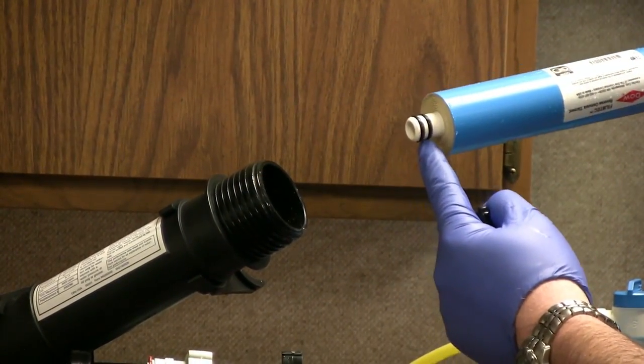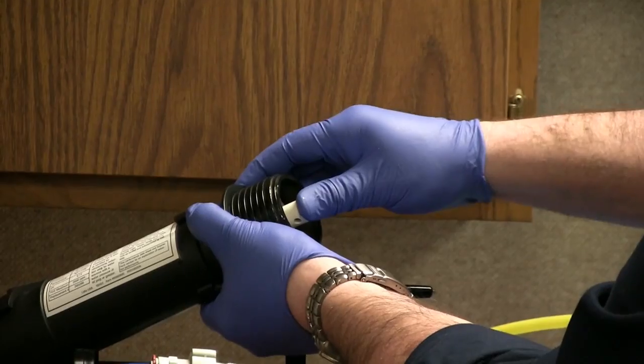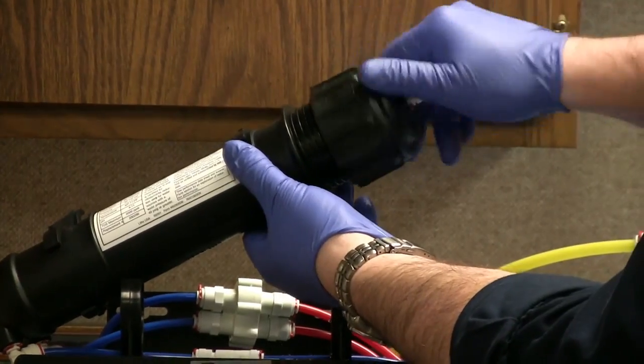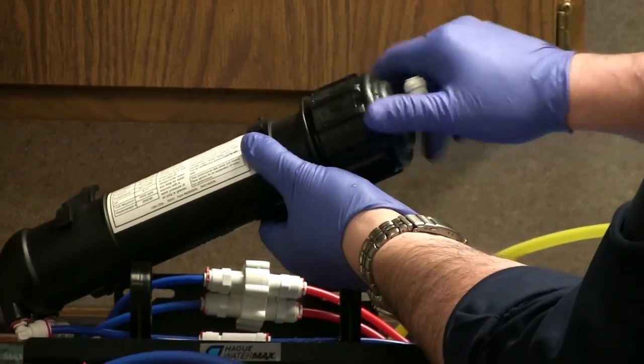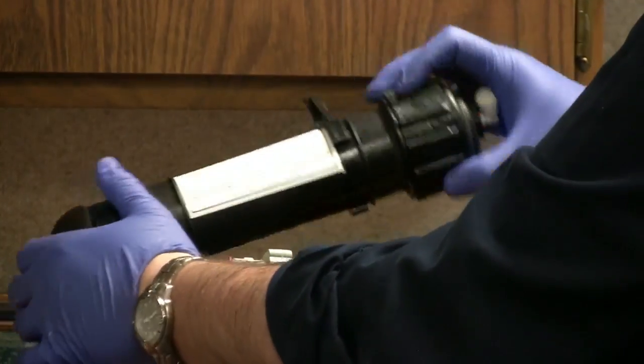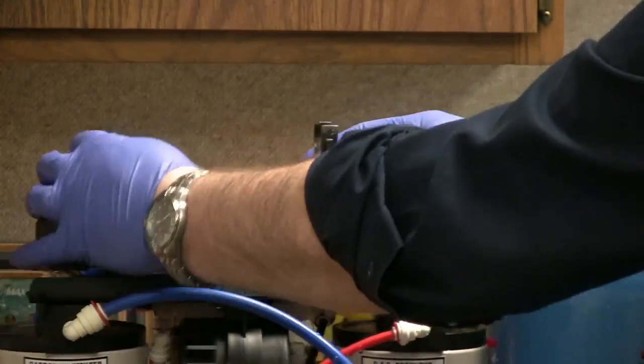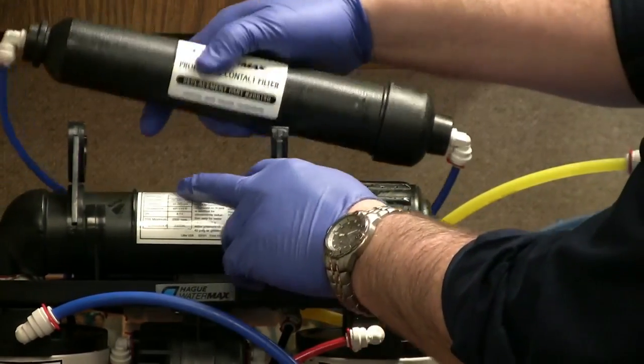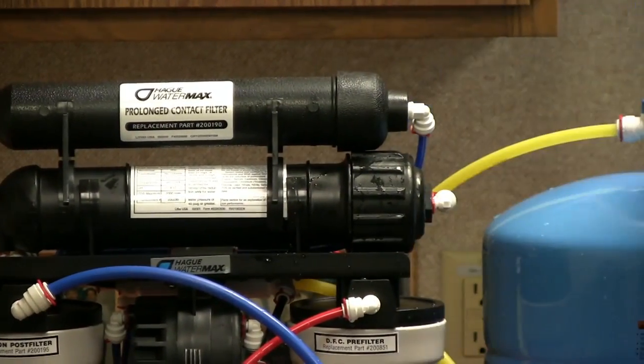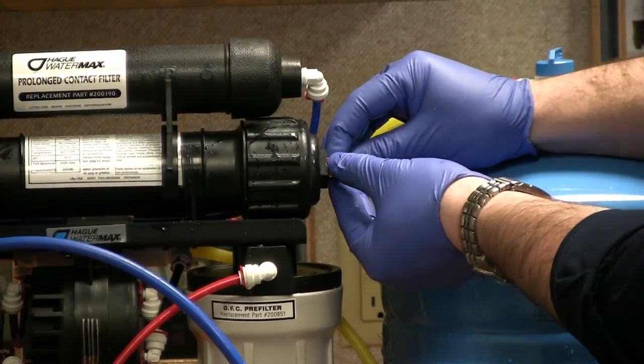Reinsert the new membrane with the double o-rings going in first. Once the membrane is seated, reinstall the cap. And this just needs to be hand tight. Put the membrane housing back in place, the prolonged contact filter, reconnect your feed line, and the small red retaining clip.